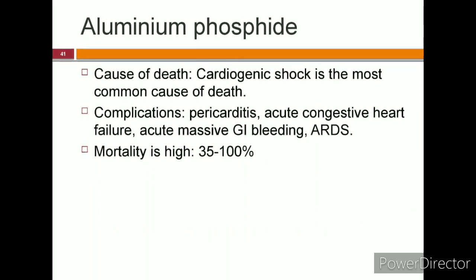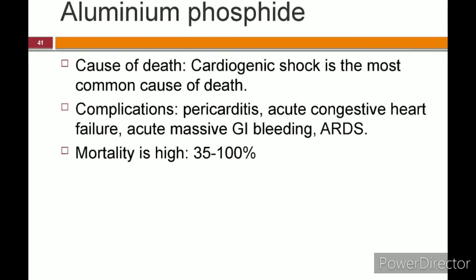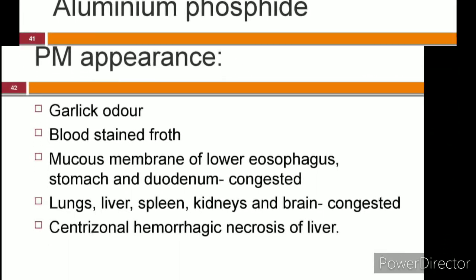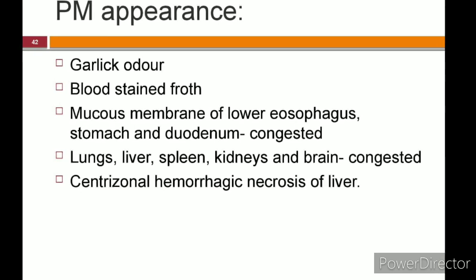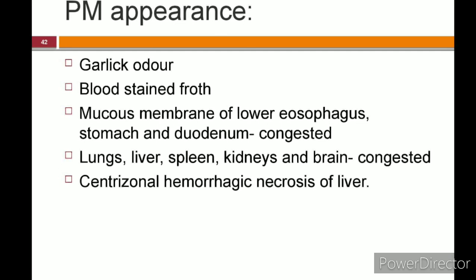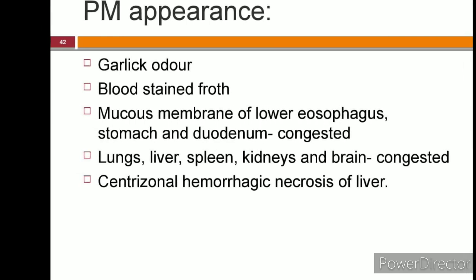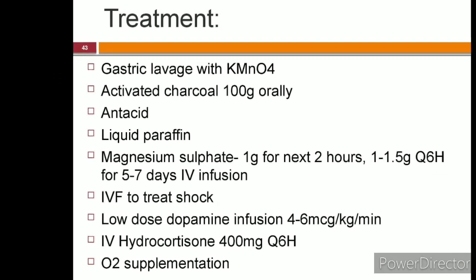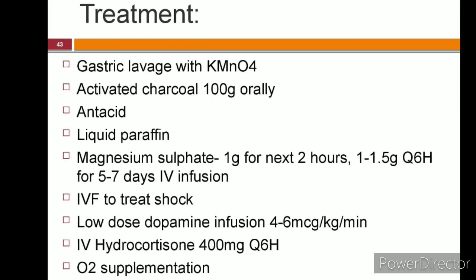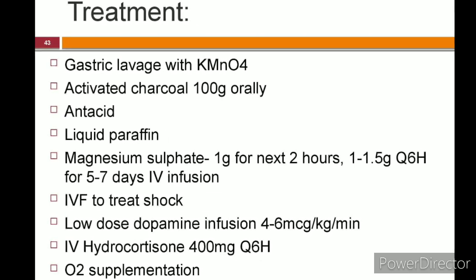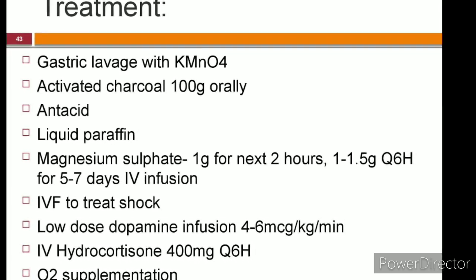The cause of death in aluminium phosphide poisoning is usually cardiogenic shock. Complications include pericarditis, acute congestive heart failure, acute massive gastrointestinal bleeding, and acute respiratory distress syndrome. Postmortem appearance: garlicky odor from the mouth and stomach contents, bloodstained froth, congested mucous membranes of the lower esophagus, stomach, and duodenum; lungs, liver, spleen, kidney, and brain show congestion; and there may be centrilobular hemorrhagic necrosis of the liver. Treatment includes gastric lavage with potassium permanganate solution, activated charcoal, antacid, and liquid paraffin. Magnesium sulfate at 1 gram for the first 2 hours, followed by 1–1.5 grams every 6 hours for 5–7 days. In shock, IV fluids and inotropes like dopamine may be given. Hydrocortisone injection and oxygen supplementation may also be needed.